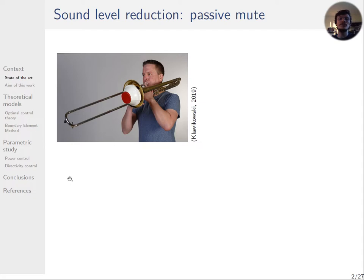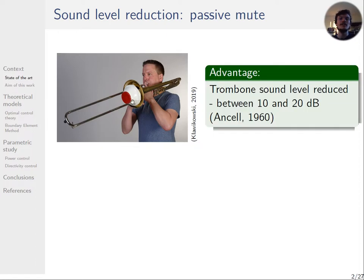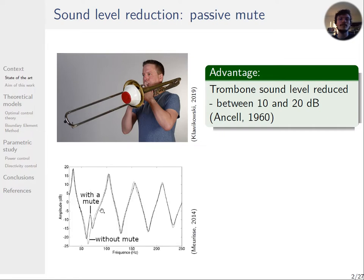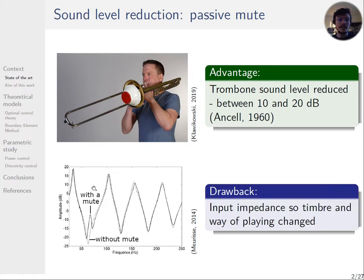Actually, passive mutes are used to control the radiated sound of a trombone, for example a cup mute, which is basically inserted inside the bell of the trombone. They are mainly used to attenuate or change the sonority made by the instrument. But we can see here that the input impedance of the instrument is impacted. So a classical mute shifts the input impedance of the instrument and the musician has to adapt his way of playing.